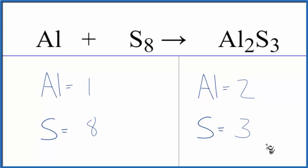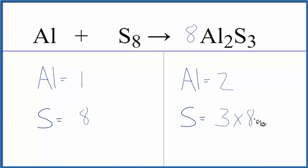So there's three and eight. What I'd like to do is find something that both of these numbers go into. The only thing I can think of is 24. Three times eight equals 24. So I'm going to put a coefficient of eight here. So three times eight, that'll give me 24.